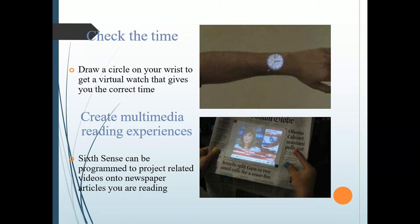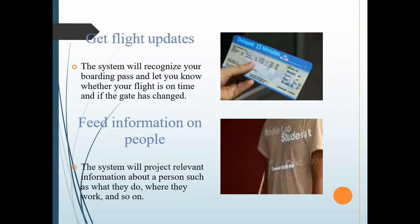Create Multimedia Reading Experiences: Sixth Sense can be programmed to project any related videos onto newspaper articles you're reading. Get Flight Updates: The system will recognize your boarding pass and let you know whether your flight is on time and if the gate has changed. Feeding Information on People: The system will project relevant information about a person, such as what they do and where they work.